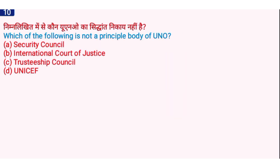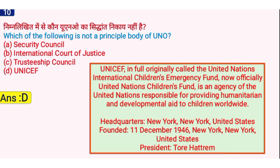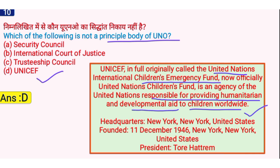Which of the following is not a principal body of the United Nations Organization? The right answer is option D, UNICEF. UNICEF is not a principal body of the United Nations Organization. UNICEF, originally called United Nations International Children's Emergency Fund, is now officially the United Nations Children's Fund — an agency responsible for providing humanitarian and developmental aid to children worldwide. Its headquarters is in New York, United States, and it was formed on 11 December 1946.